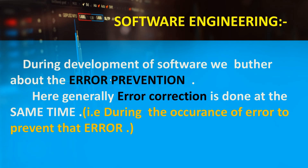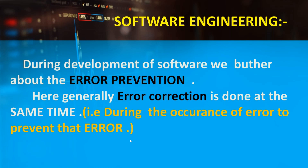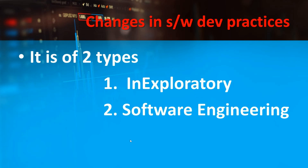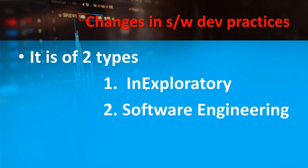In the software engineering mode, whenever an error is encountered, we correct it at that same time so that we do not face any problems in the future. Here, error correction is done at the same time, that is during the occurrence of the error. So these are the two methods of change in software development practices: the exploratory method and the software engineering method. That's all for today, thank you, bye bye.